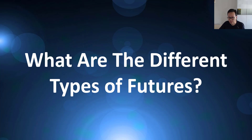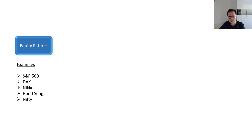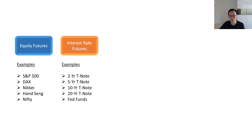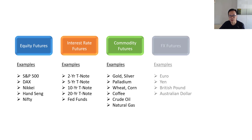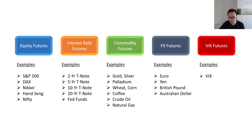Next question: what are the different types of futures? Futures are segregated according to the underlying asset class. There are equity futures — examples include index futures on the S&P 500, DAX, Nikkei, Hang Seng, and Nifty. Then there are interest rate futures such as bond futures, which mostly revolve around government bond futures like treasury notes and bonds of different maturities. There are also commodity futures on metals such as gold and silver, on agricultural products such as wheat and corn, and on energy such as crude oil and natural gas. Then there are FX futures on major currencies like the euro, yen, and pound. And lastly, there is a special class of futures on the volatility index called VIX futures.